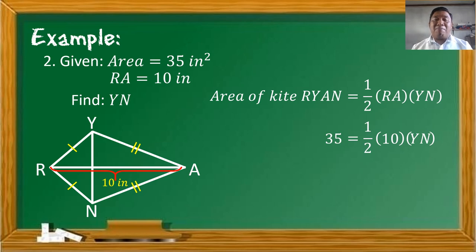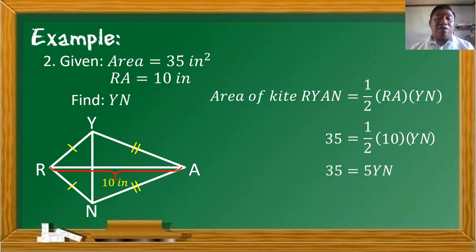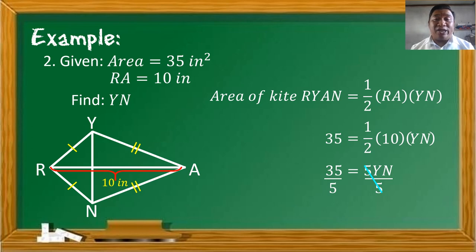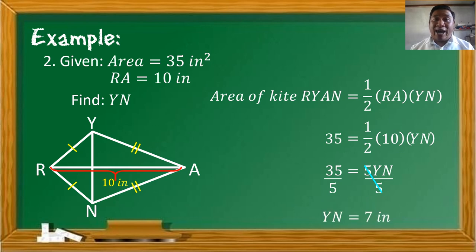To solve for the measure of diagonal Y-N, we divide both sides by 5. Canceling the 5 on the right side leaves Y-N, and 35 divided by 5 equals 7. Therefore, the measure of diagonal Y-N is equal to 7 inches.